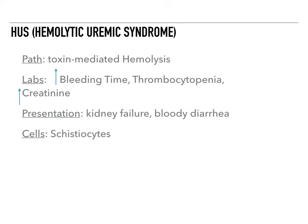What happens is that the platelets aggregate, red blood cells try to pass through, and they get sheared in half, creating schistocytes. But because this is all happening in the kidney, you're getting classic thrombocytopenia, classic anemia, and schistocytes — but it's specifically happening in the kidney, which causes an acute uremic syndrome. You have an increased creatinine and signs of kidney failure.